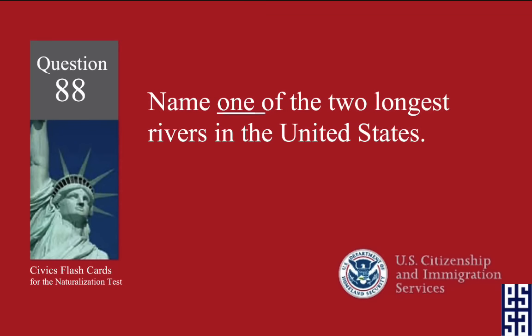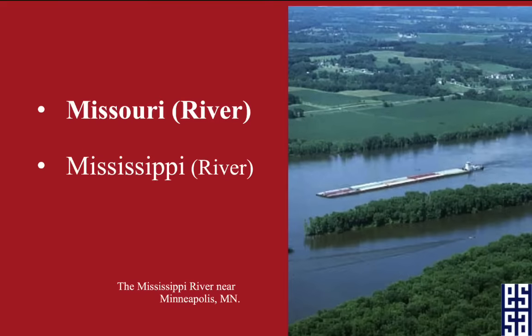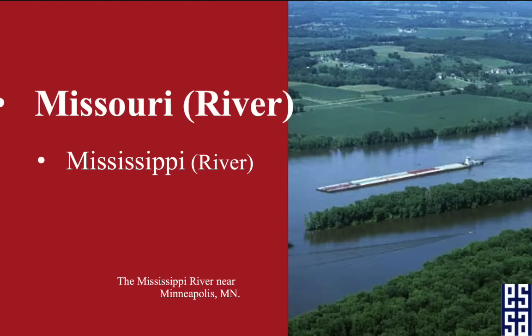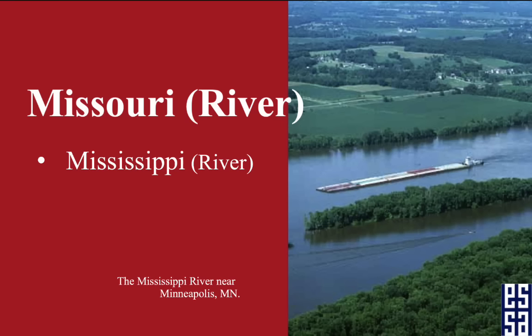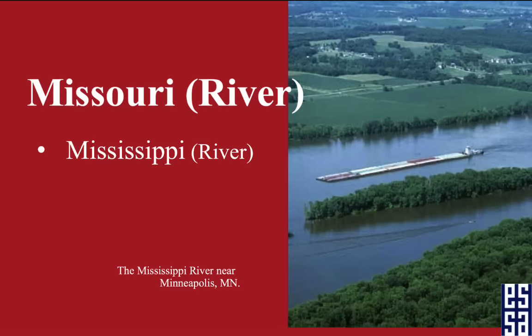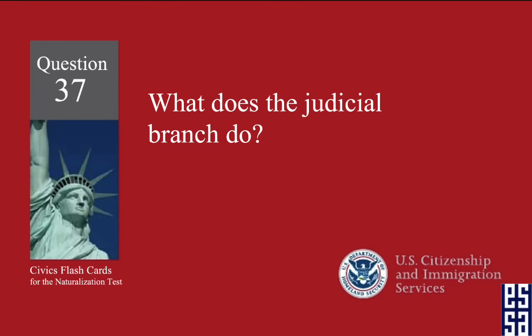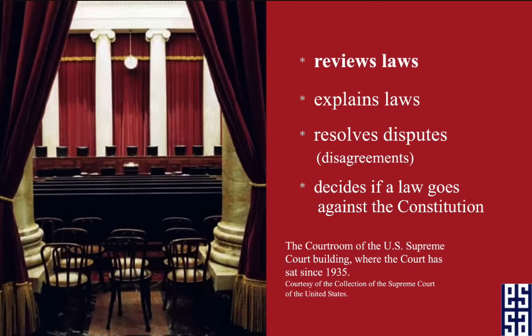Name one of the two longest rivers in the United States. The Missouri River — the other one is the Mississippi. Whichever one you can pronounce easier is the one to remember. What does the judicial branch do? The judicial branch reviews laws.